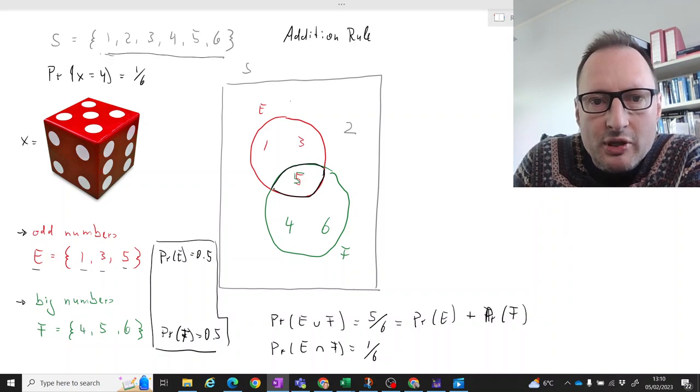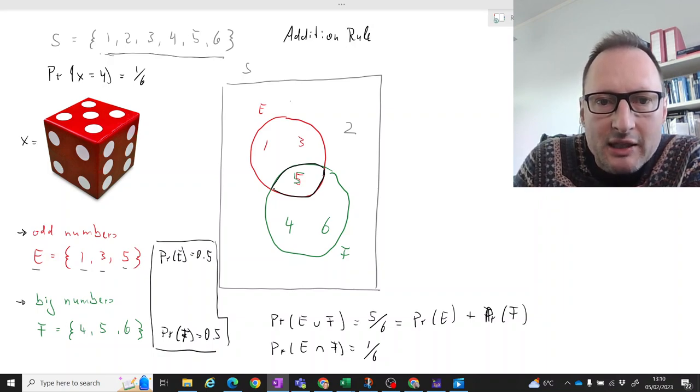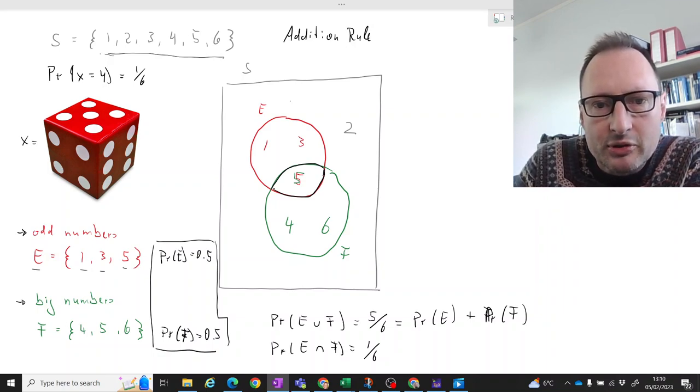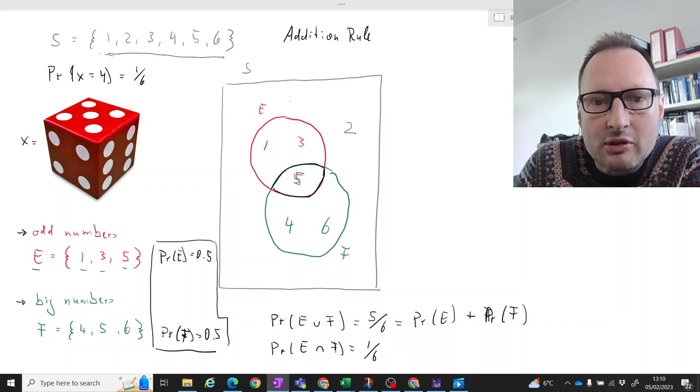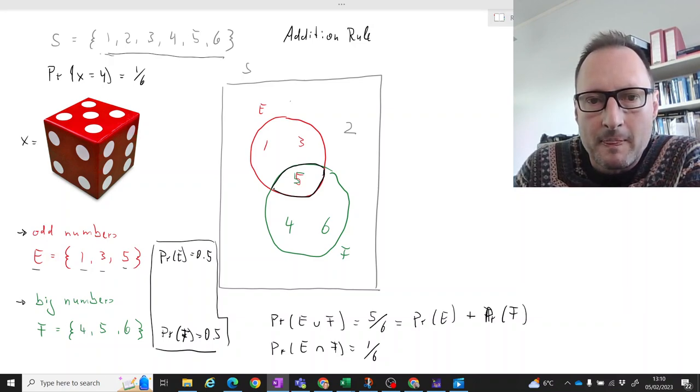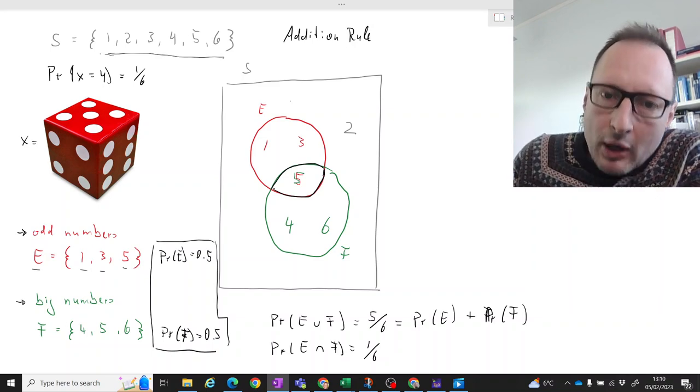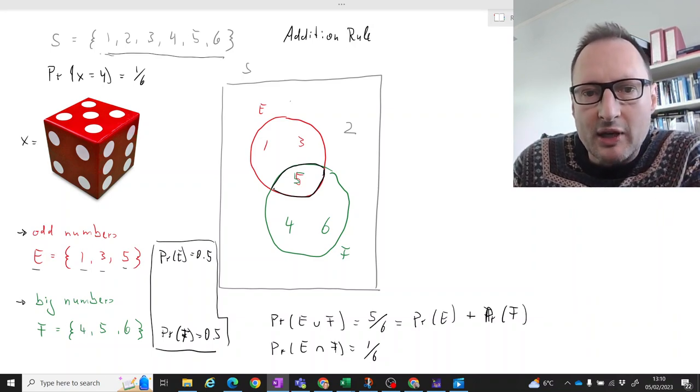Well, if we were to add the probability for the red outcome and the probability for the green outcome, which is what we would do if we just added these two probabilities, we would double count the 5. Because it's both red and green. So we need to subtract once the probability of getting a 5.